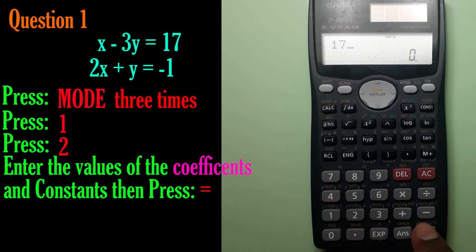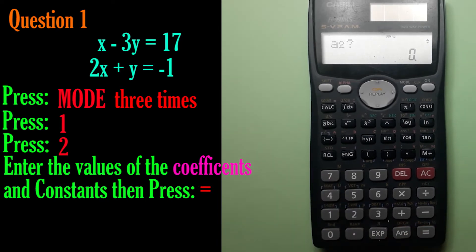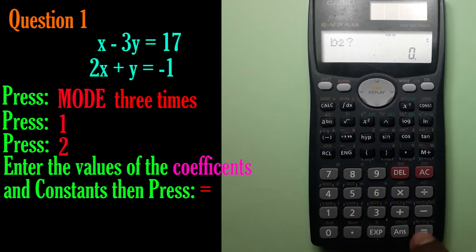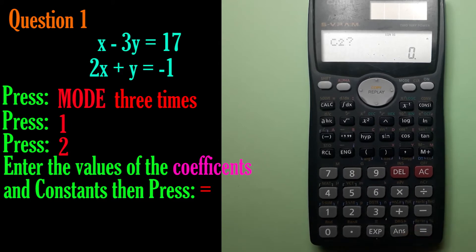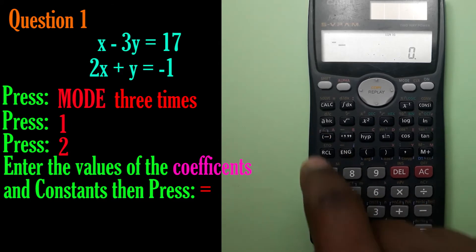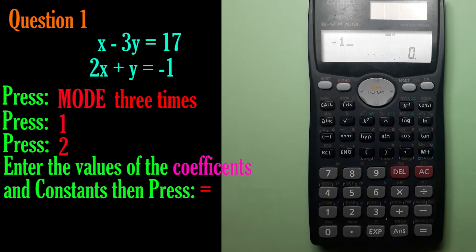Now a2 equals 2, press equals. Then we enter b2 equals 1, press equals. Then we enter negative 1 for the next value.